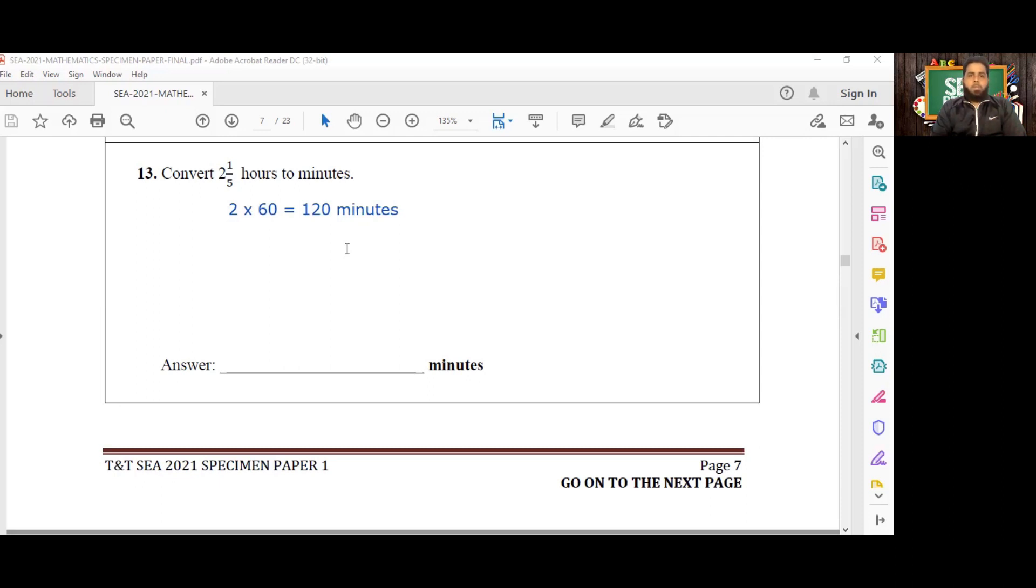Now what about one-fifth of an hour? One-fifth of an hour, to get that we'll basically have to divide 60 by 5, which is going to give me 12. So all together now, if I sum these 120 minutes to 12 minutes, I'm going to get a total of 132 minutes.